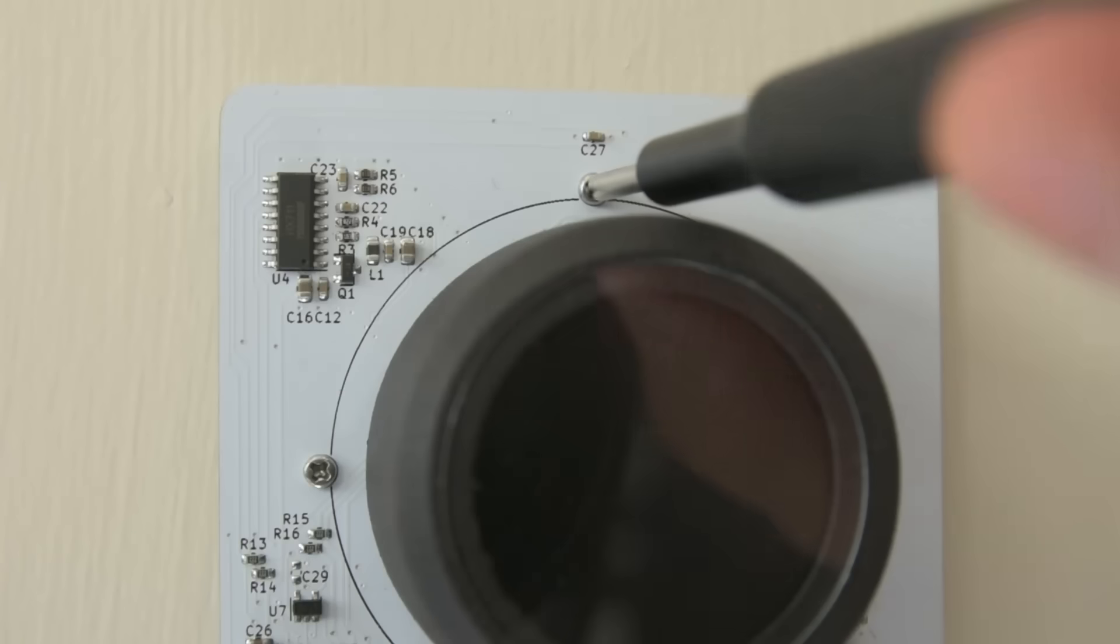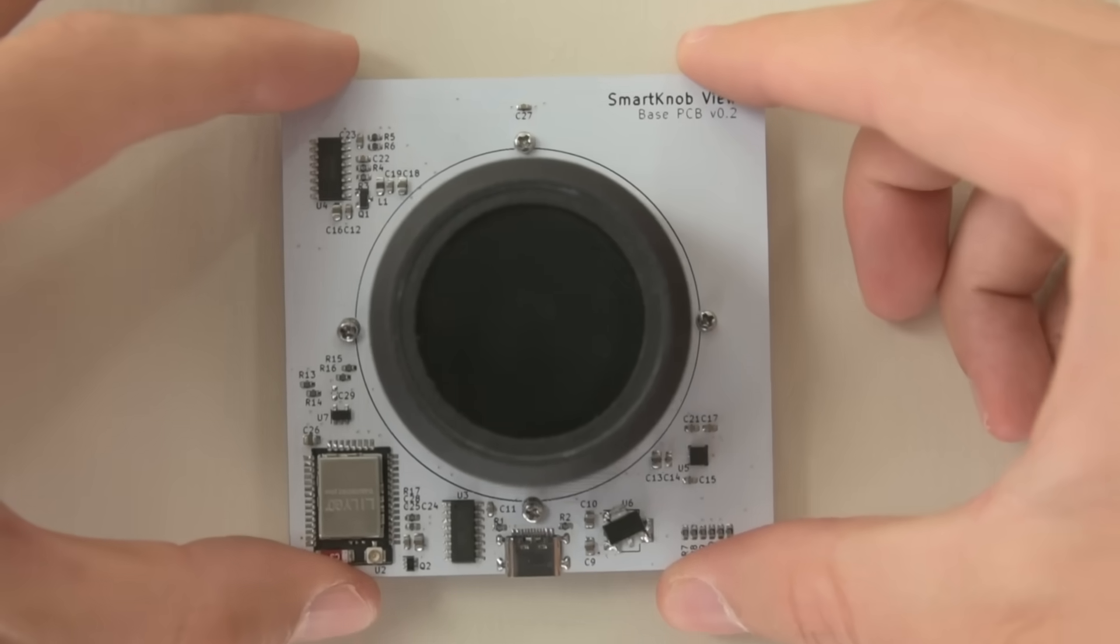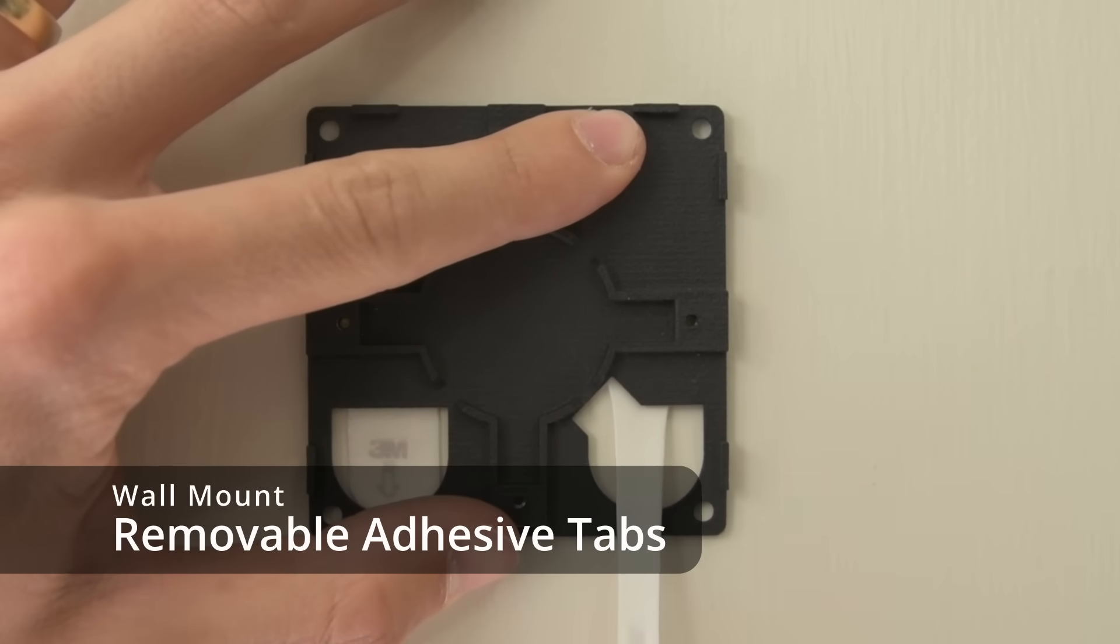Now, it's going to be easier to look at this on my desk so let's unmount this from the wall. These four M.2 screws separate the PCB from the backplate and then we can just pull on these adhesive strip tabs to release it from the wall.